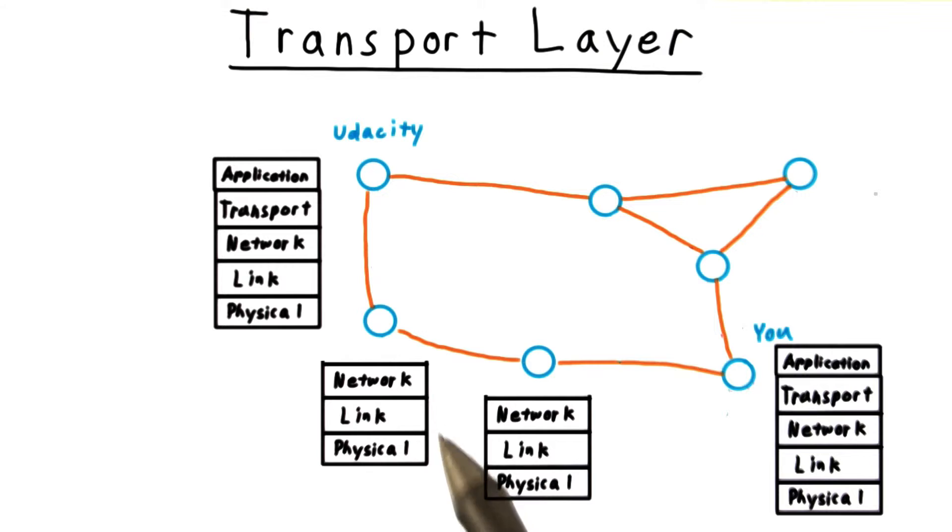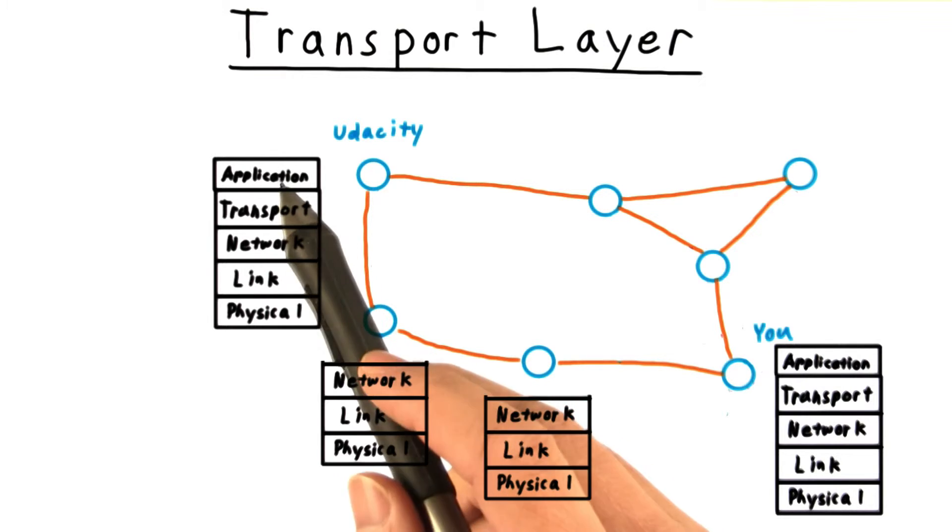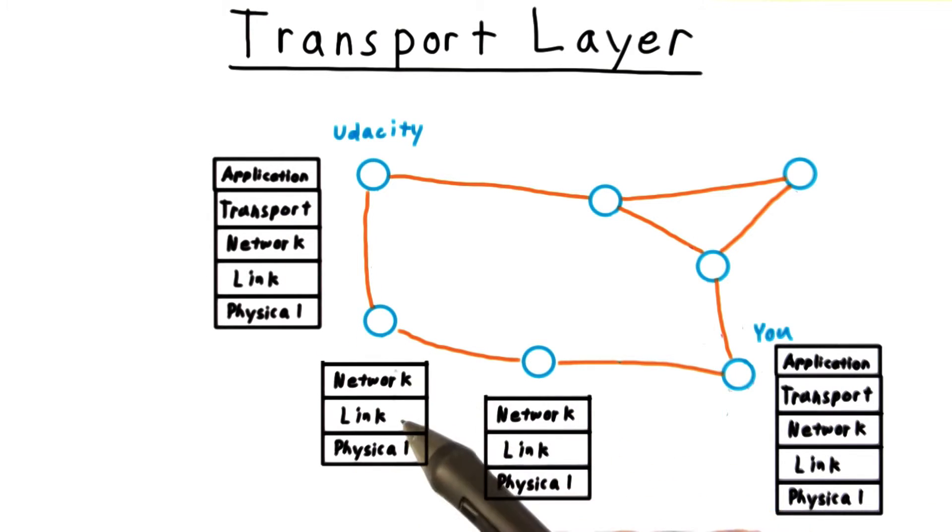It's important to realize that the transport layer is really only active at the endpoints of the route. The intermediate routers on the internet need only look at the IP address to know where to forward the packet to, so they never examine the port number.